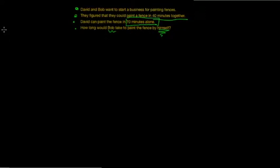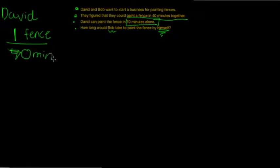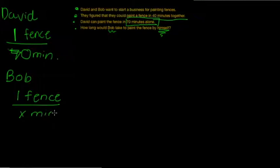To solve this problem, we're going to have to come up with David's fraction first. David can complete 100% of the work, or one fence, within 70 minutes. Now, Bob can complete 100% of the work, or one fence, in an unknown amount of minutes. Let's represent that with X.